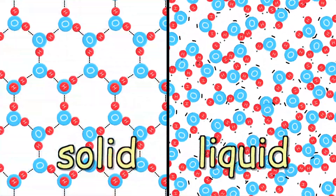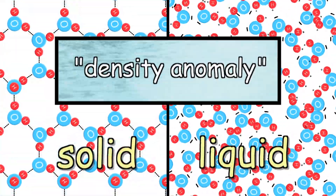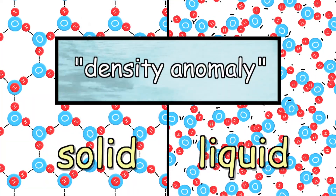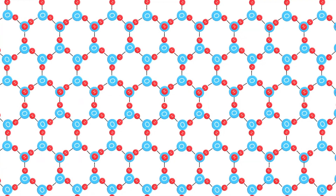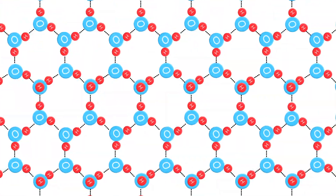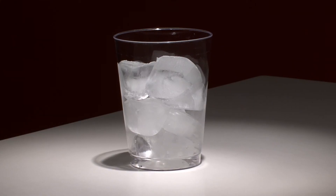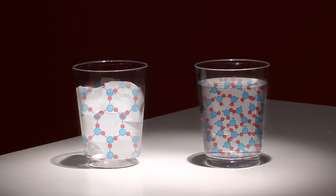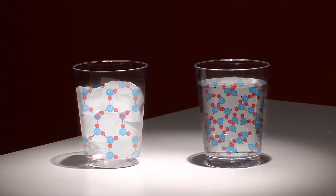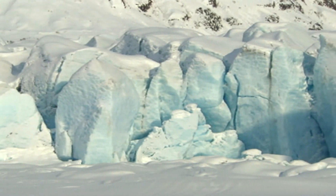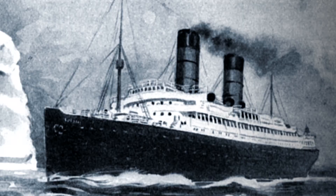This crystal lattice structure explains why H2O is less dense in solid than in liquid form — called water's density anomaly. As you lock one water molecule to the next and the next, you build up a network that actually has a lot of empty space. All that empty space means there are far fewer H2O molecules in a cup of ice than in a cup of water. Fewer molecules means it's less dense, which is why ice floats.